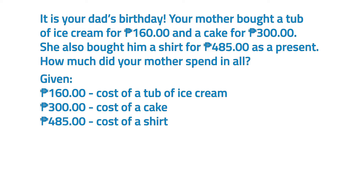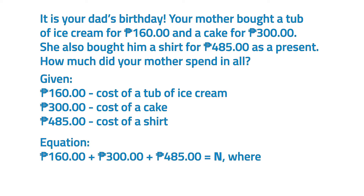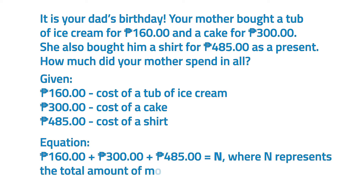For step 2, let's plan what to do. To find the total cost of the things your mother bought, we must add the prices of the tub of ice cream, the cake, and the shirt. So the equation will be 160 pesos plus 300 pesos plus 485 pesos equals N, where N represents the total amount of money your mother spent.